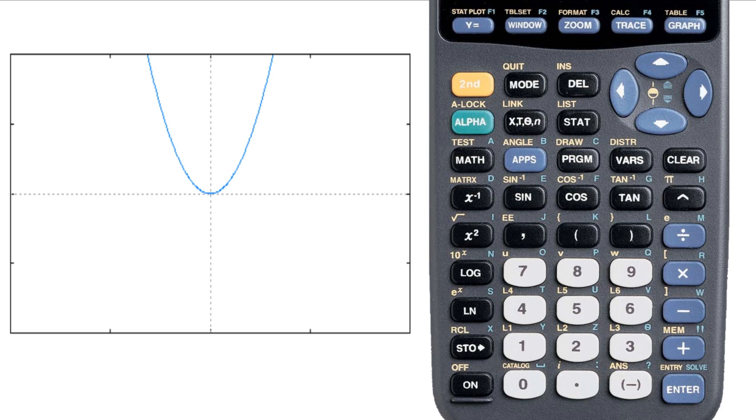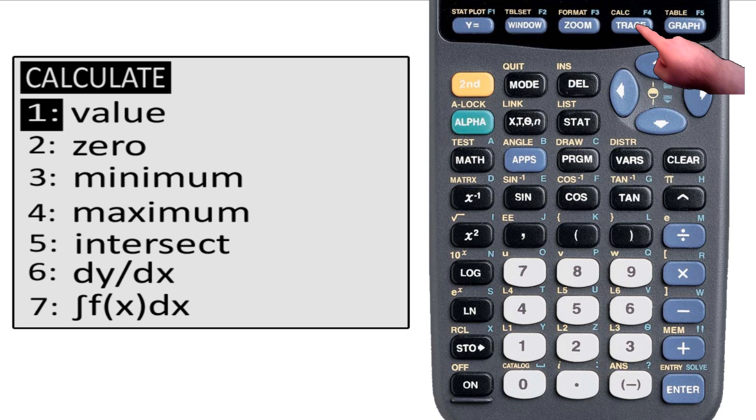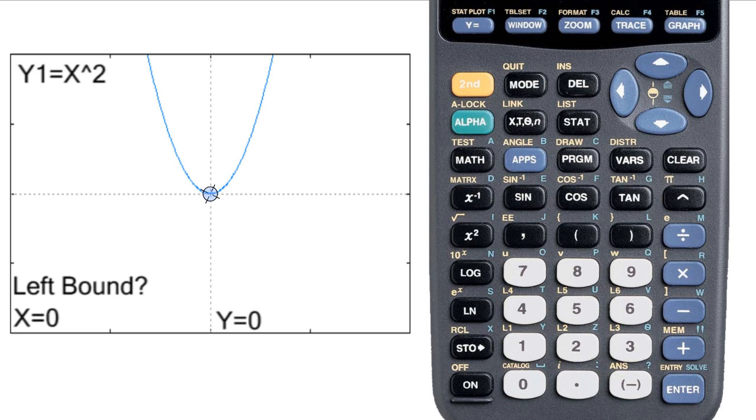So, we go to the calc menu, which is the second function of the trace button. Now I want to find the minimum of this function, so we select minimum. It brings us to the graph, and we have control of a cursor. This time, one that looks like an alien from Galaga, and that only moves along the curve.